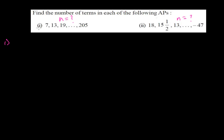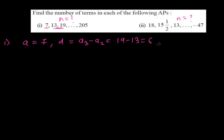Let me write all the given information for the first question. The first term 'a' is 7. The common difference 'd' can be found by subtracting two consecutive terms: 19 minus 13 equals 6. The last term, which is the nth term aₙ, equals 205. I don't know which term position 205 is — it could be the 40th, 60th, or 34th term — that's what I need to find out.